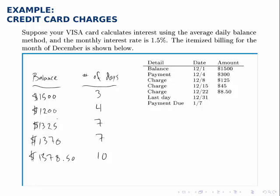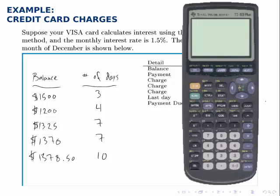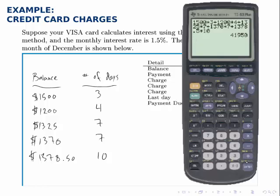To add up the total, we multiply each balance by the number of days it applies: 1,500 times 3, plus 1,200 times 4, plus 1,325 times 7, plus 1,370 times 7, plus 1,378 times 10. Adding up the balance across all 31 days gives $41,950. Dividing that by 31 — the number of days — gives us the average daily balance of $1,353.23.